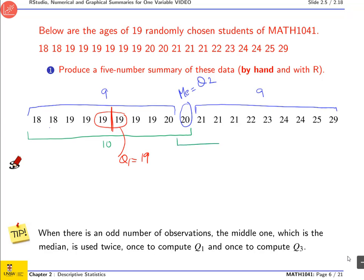Same thing for the upper half of the numbers. Counting to five, so this is where the break should be. Five numbers on either side. And again, I'm going to average the two values to get my third quartile, which will have to be 22.5.